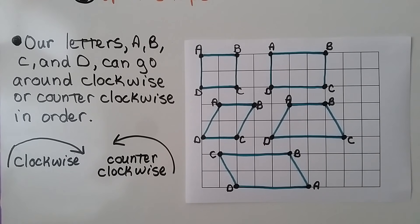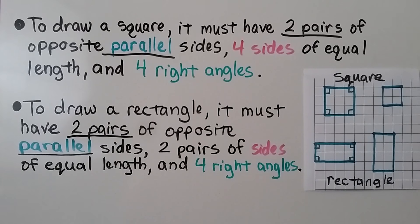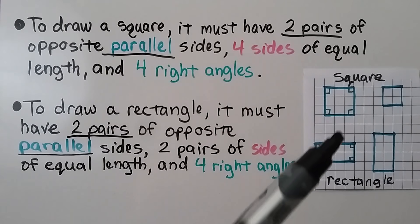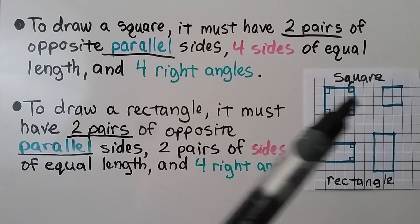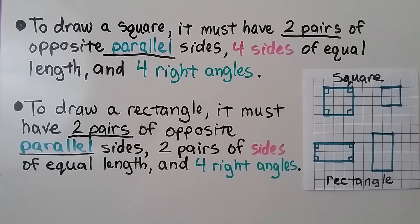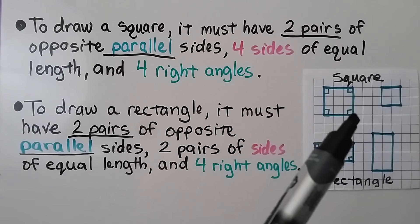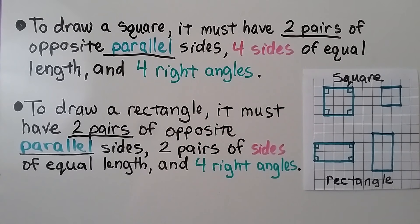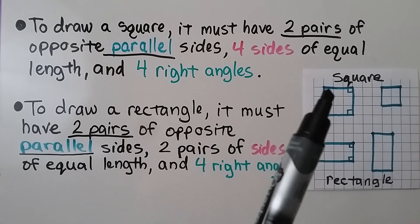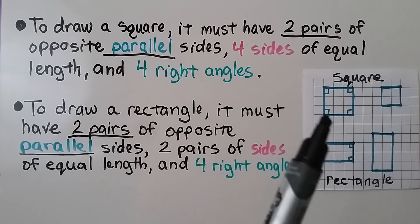To draw a square, it must have two pairs of opposite parallel sides — here's one pair and here's another pair. It needs four sides of equal length; each side is three squares long. And it needs four right angles: one, two, three, four.